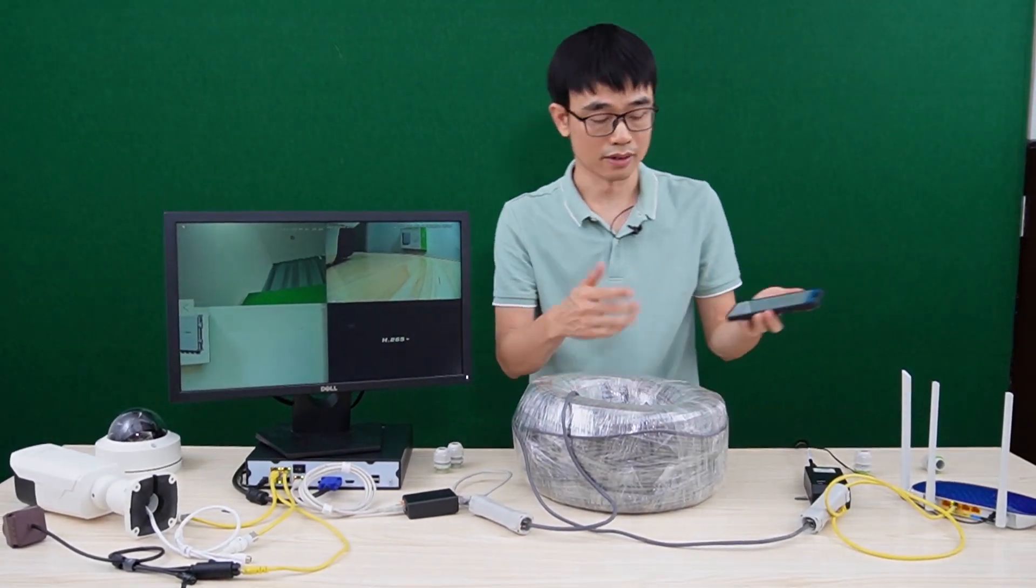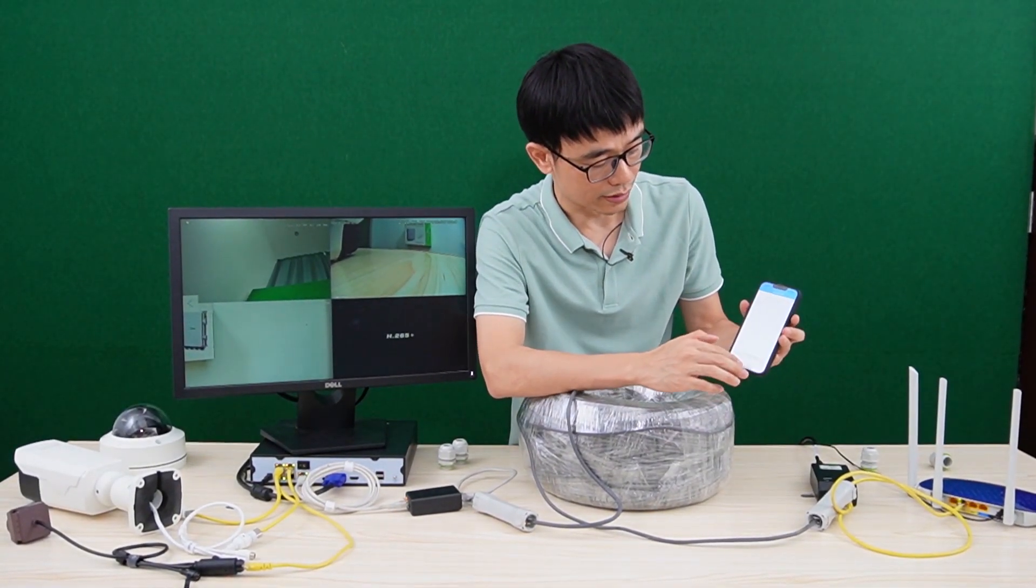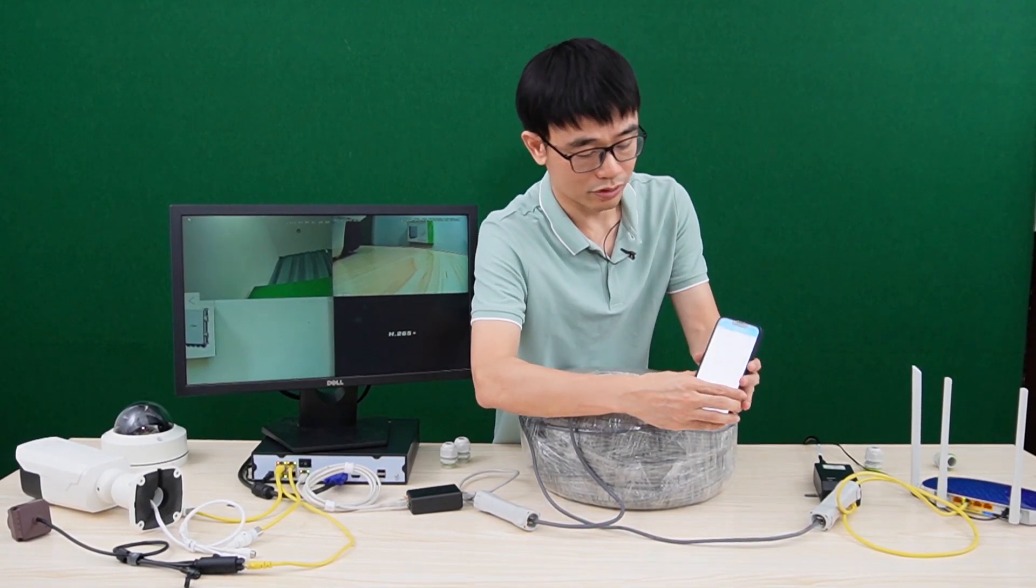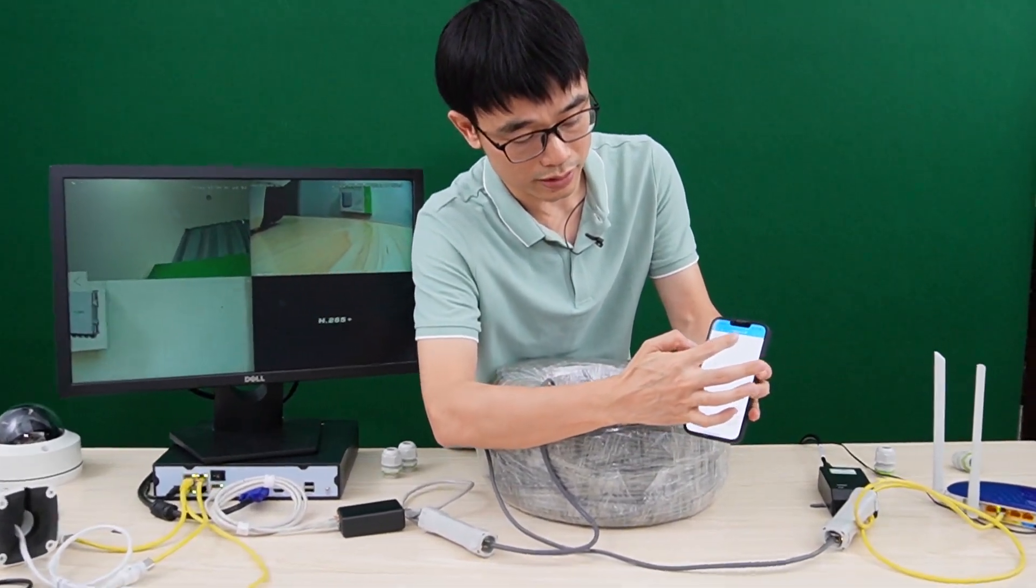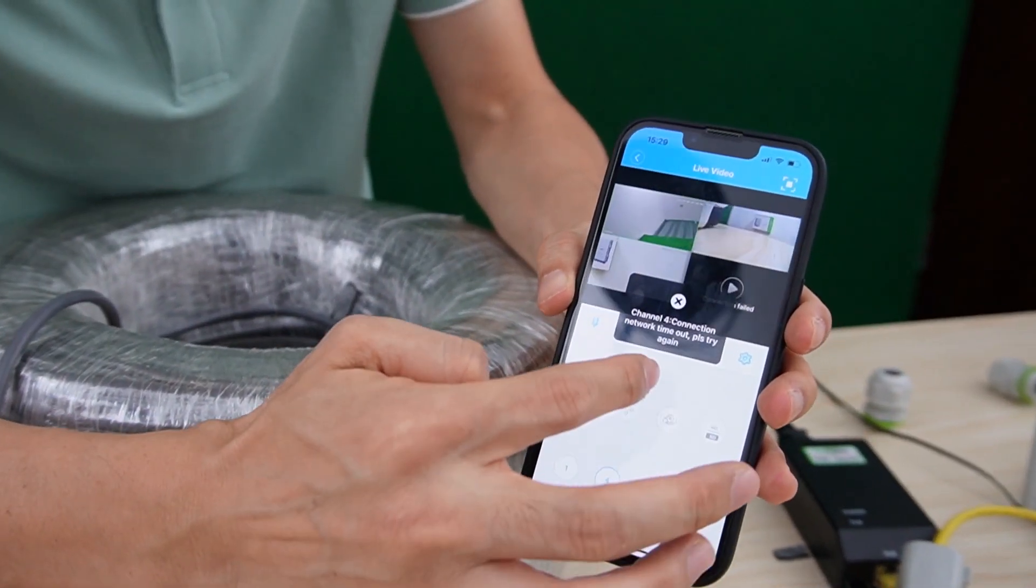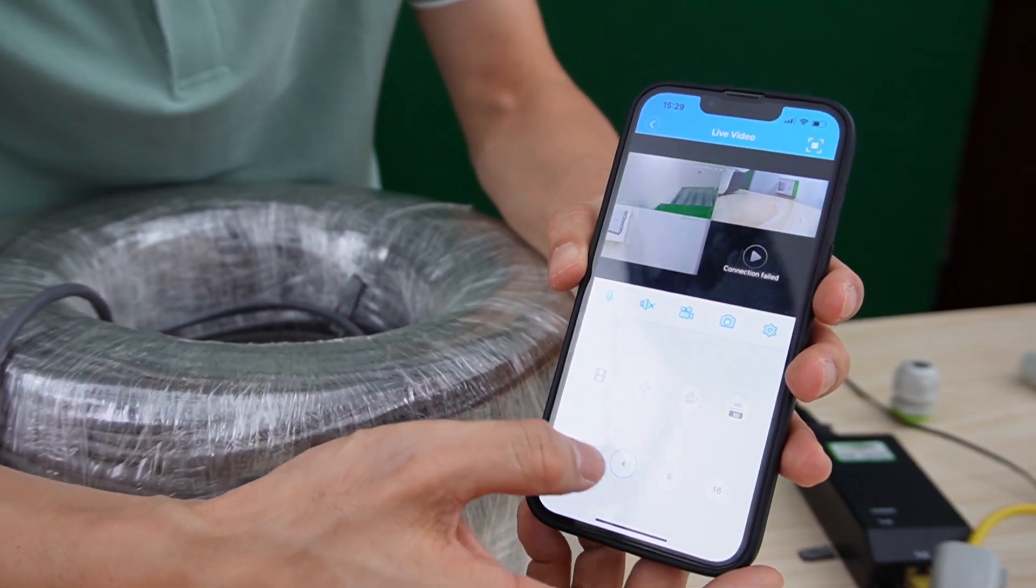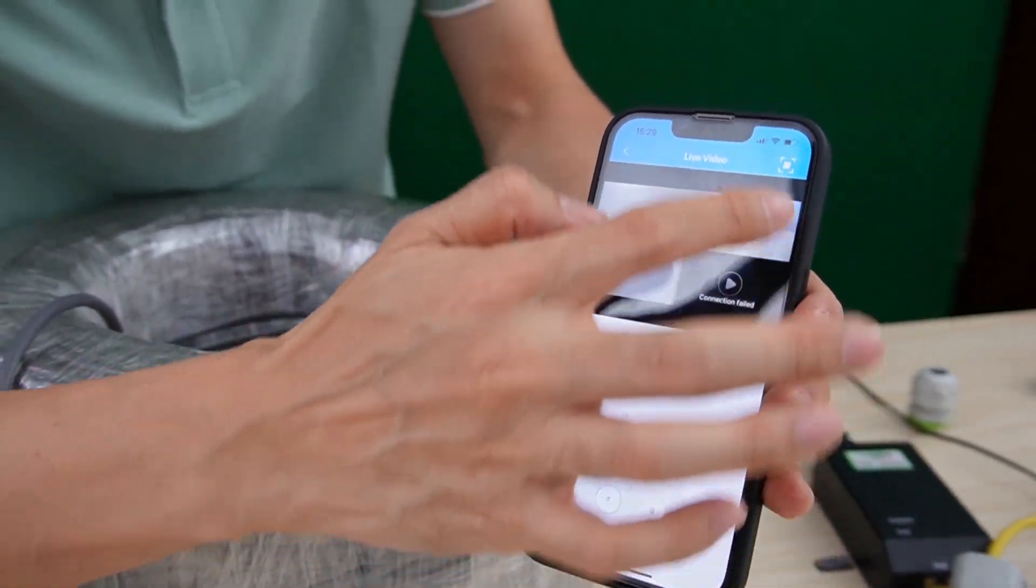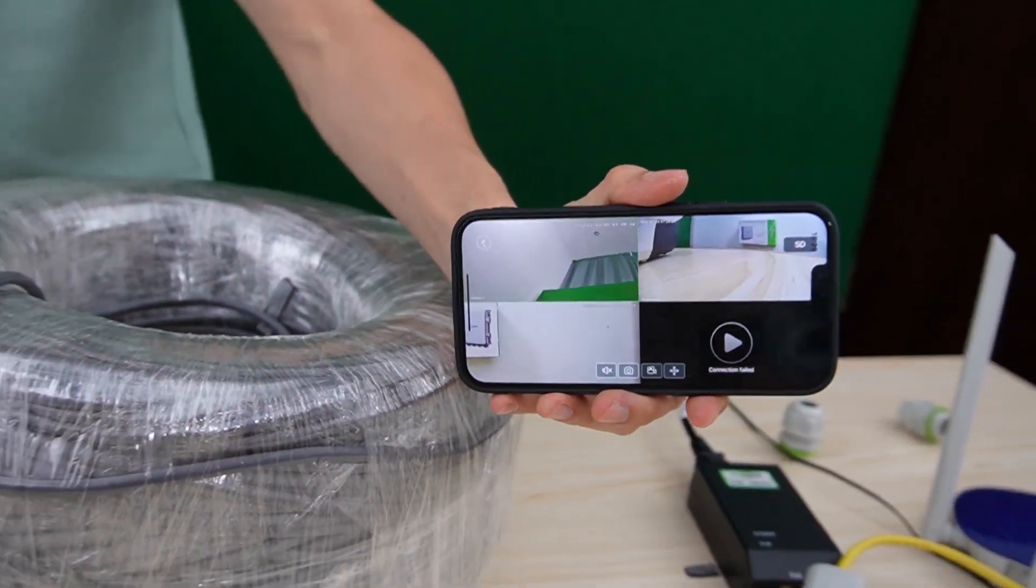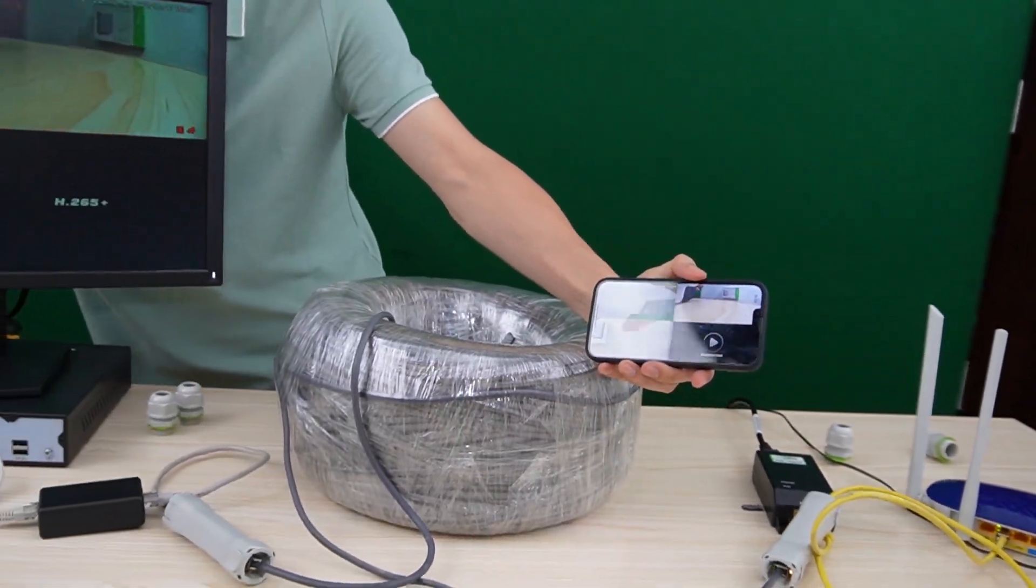Now let's just move to the software. This is the software, now it's connecting to the router. Let's just move close, see whether we can see the live video or not. Now we got the one. Let's switch to the four mode. Okay, I think we have seen all three cameras. Now it's live. Let's just test whether it's live or not. Yes, it's live.